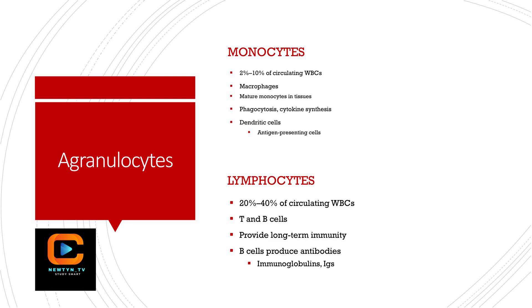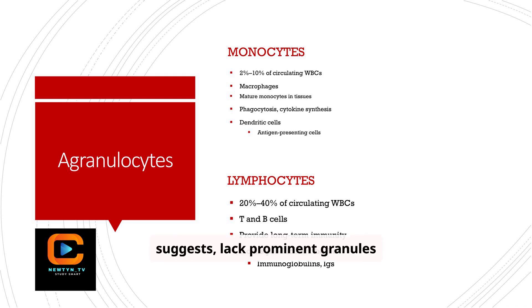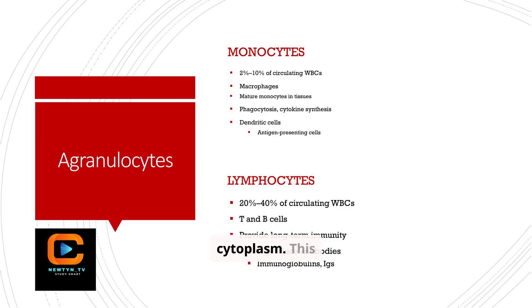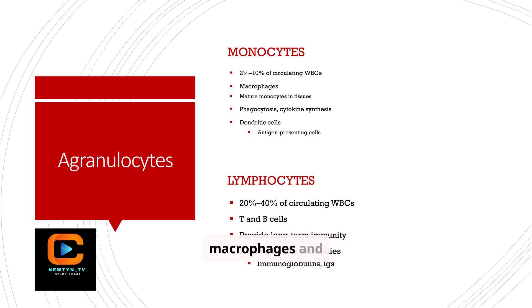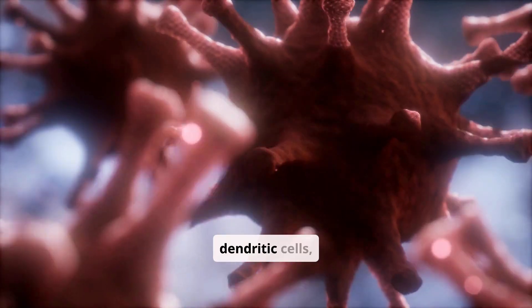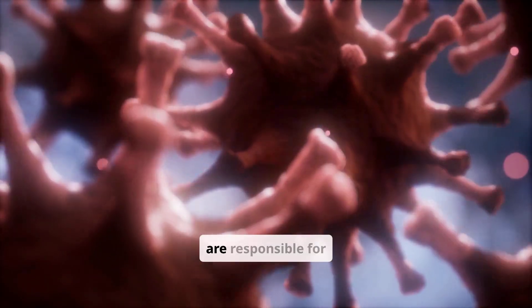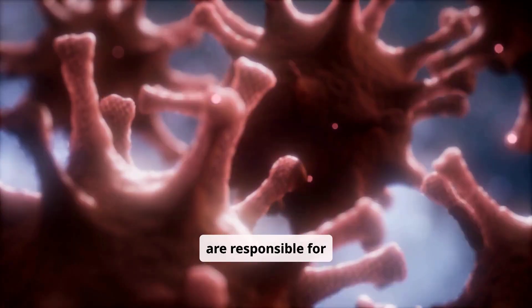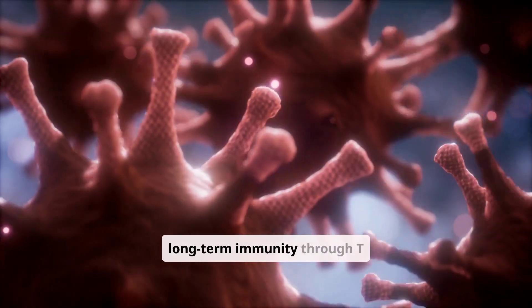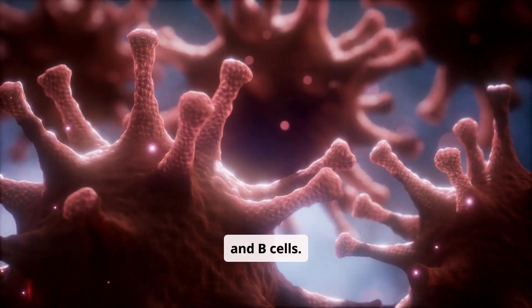Agranulocytes, as the name suggests, lack prominent granules in their cytoplasm. This group includes monocytes, which mature into macrophages and dendritic cells, and lymphocytes, which are responsible for long-term immunity through T and B cells.